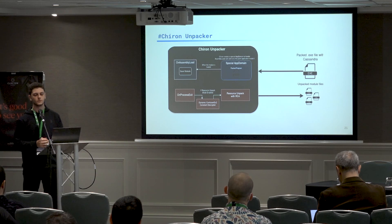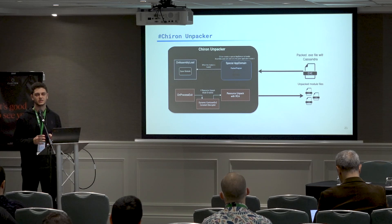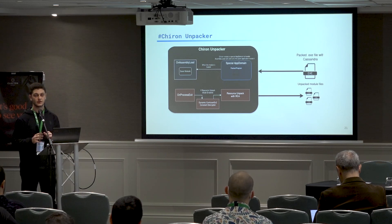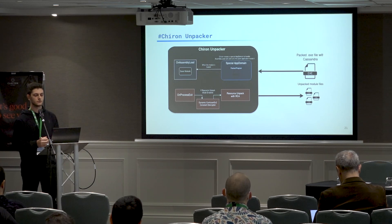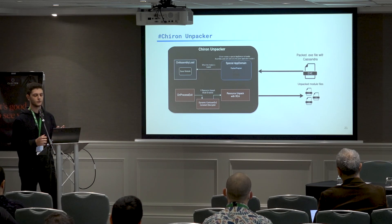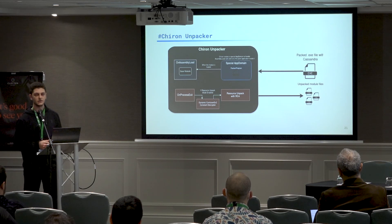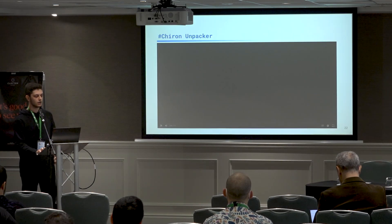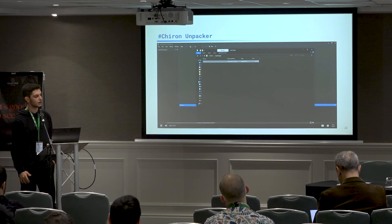Tyron Unpacker was created to automate the unpacking process for all packers working in this way. It creates a special application domain and handles the assembly load events. This allows us to handle all executable .NET modules loaded into memory after they are loaded. If you have a file protected with something like Cassandra Protector, you can unpack it with Chiron, which will be made publicly available on the Malvation GitHub account. Now I will show you how Chiron is used and how it looks.